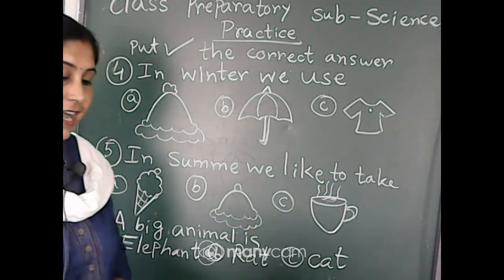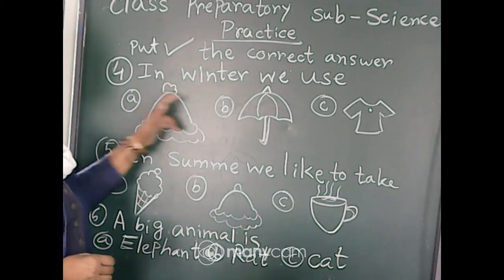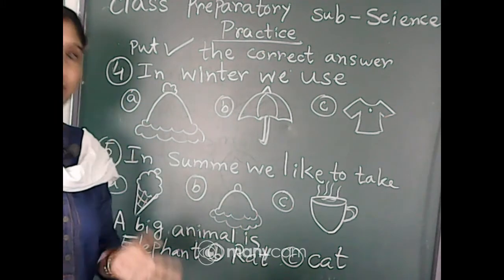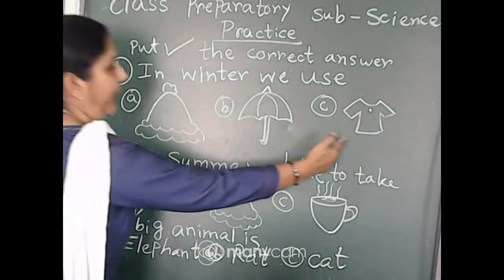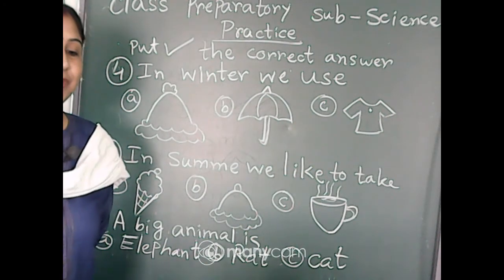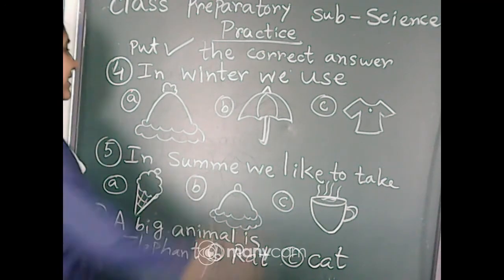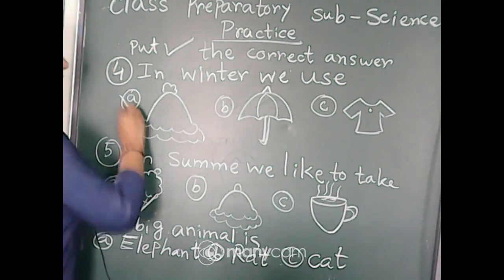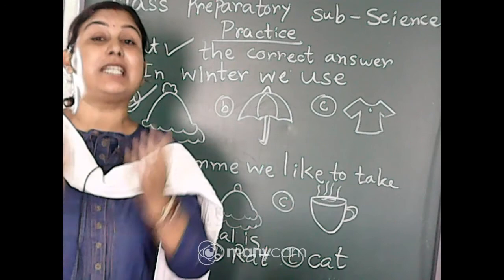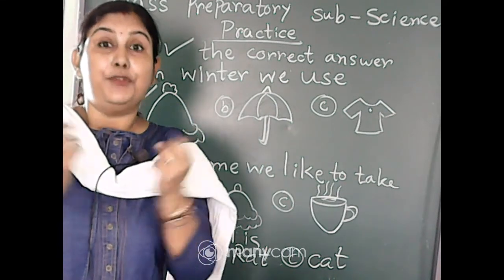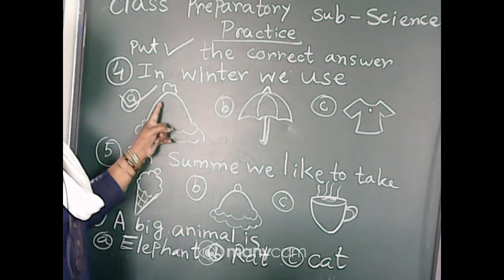Now we have number four. In winter we use... Option A is woolen cap, B is umbrella, and C is t-shirt. Which one will be the correct answer? Yes, the correct answer will be woolen cap, because in winter we like to take woolen cap to protect ourselves from the winter or cold. So in winter we use this woolen cap.